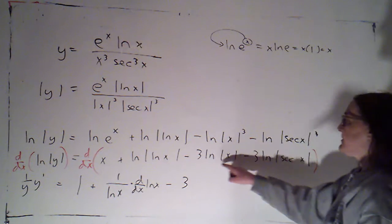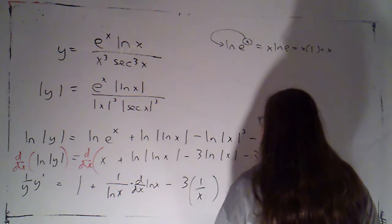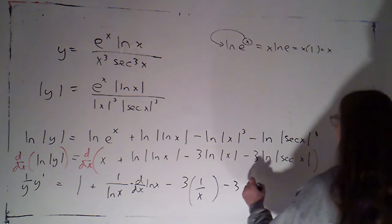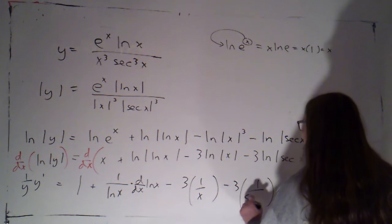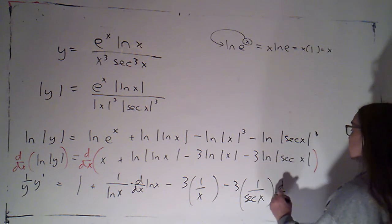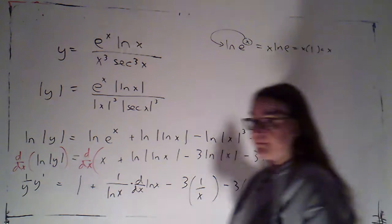Minus 3 times the derivative of the natural log of the absolute value of x is 1 over x. minus 3 times the derivative of the natural log of the absolute value of secant of x is 1 over secant of x, and then times the derivative of secant of x.